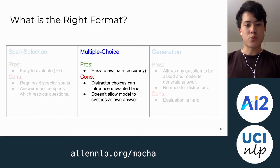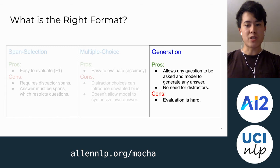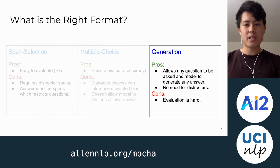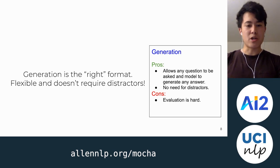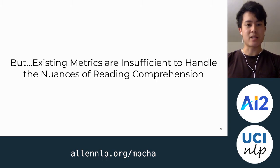The second format is multiple choice. It's easy to evaluate, but again we need distractor choices, which can introduce unwanted biases, and this also isn't very flexible because the model can't synthesize its own answer. The final format is generation, which is much rarer than the other two. The good thing here is that any question can be asked because the model can generate the answer and there's no need for distractors, but evaluation is hard. I put forth that generation is the right format — it's flexible and doesn't require distractors — but existing metrics are insufficient to handle the nuances of reading comprehension.